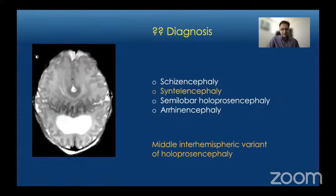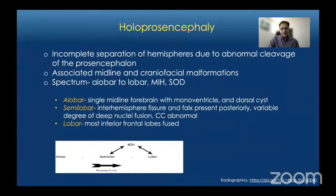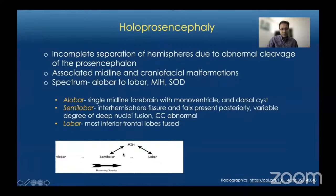Holoprosencephaly is characterized by incomplete separation of hemispheres due to abnormal cleavage of the prosencephalon. It is often associated with other midline anomalies including corpus callosum anomalies, the hypothalamic-pituitary axis, and craniofacial malformations. Holoprosencephaly is a spectrum: the most severe form is alobar, and the least severe is lobar. The middle inter-hemispheric variant sits somewhere between semilobar and lobar. In alobar holoprosencephaly there is a single midline forebrain with a horseshoe-shaped monoventricle and a dorsal cyst.